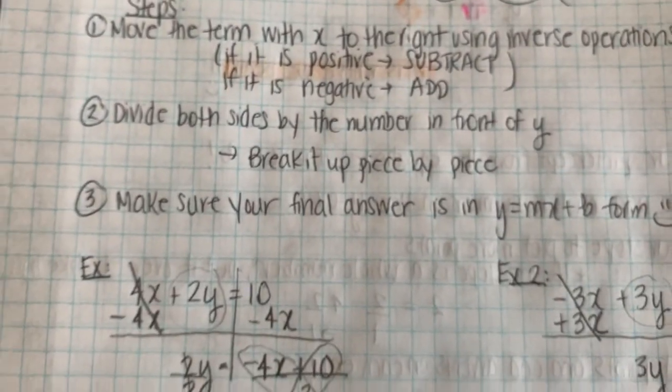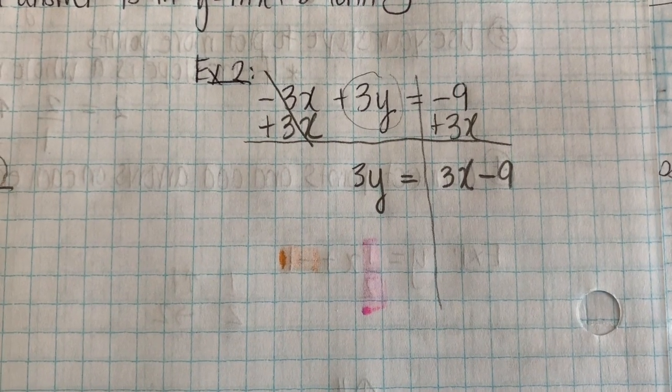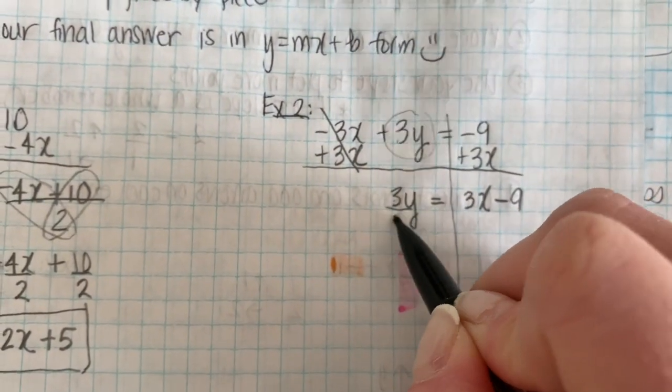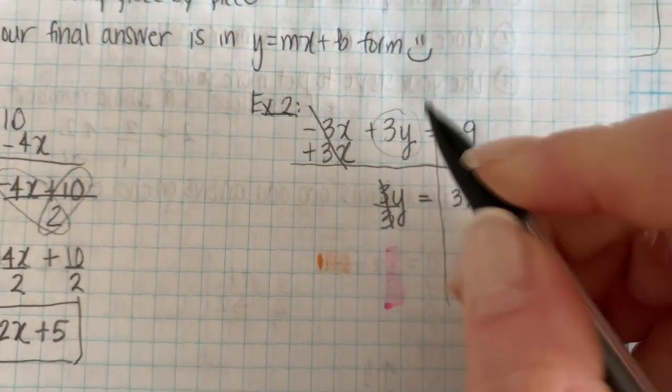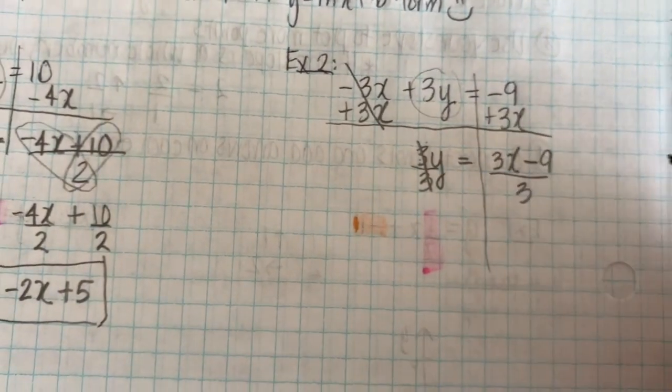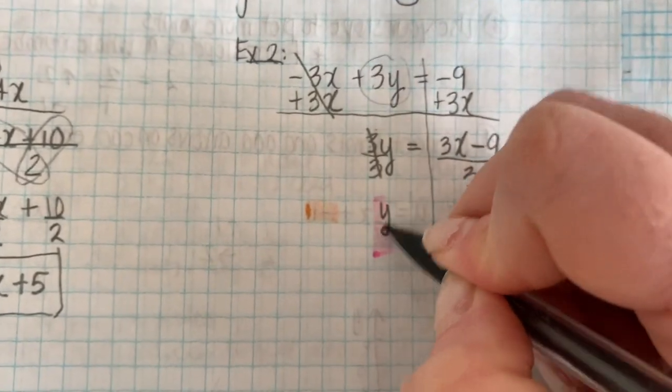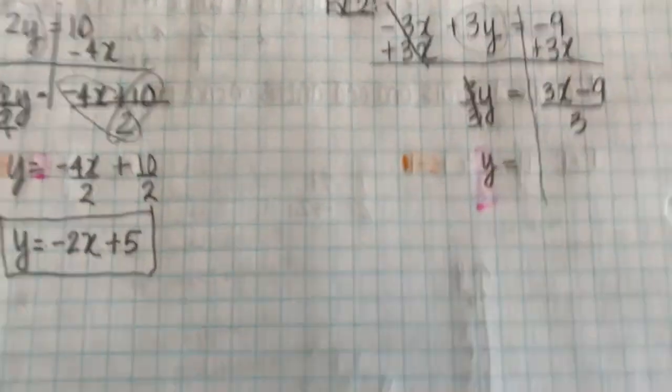Which is to divide both sides by the number in front of y. So I'm going to divide both sides by the number in front of y, which is 3. This cancels out because 3 divided by 3 is 1. And what I do to one side, I must do to the other side to keep the balance. Right? So I'm going to set myself up by writing y equals. And now it's time to break up this division.